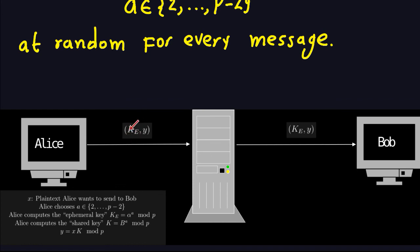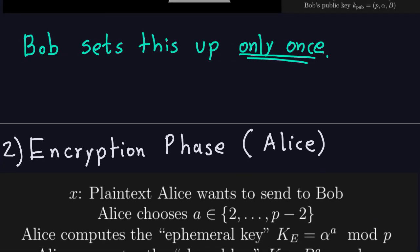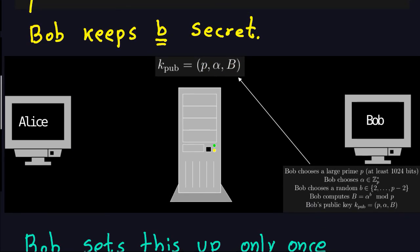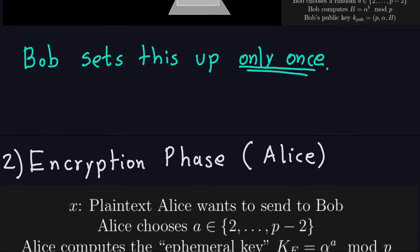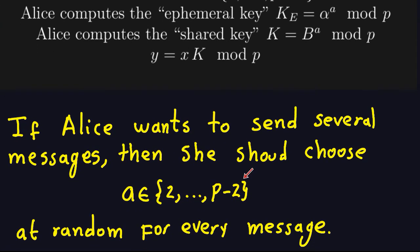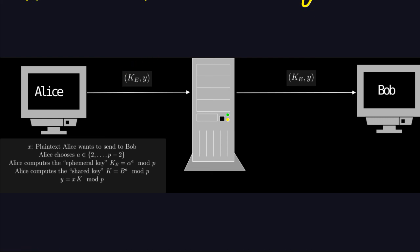Bob and Alice didn't pre-agree on a shared key in this scheme — Bob just made his setup public. Instead, Alice sends the ephemeral key from which Bob can derive the shared key. What she sends is roughly twice as long as the plaintext, because the ephemeral key is about half the bit length of P, and Y is similar in size — so the total sent is about double the plaintext.